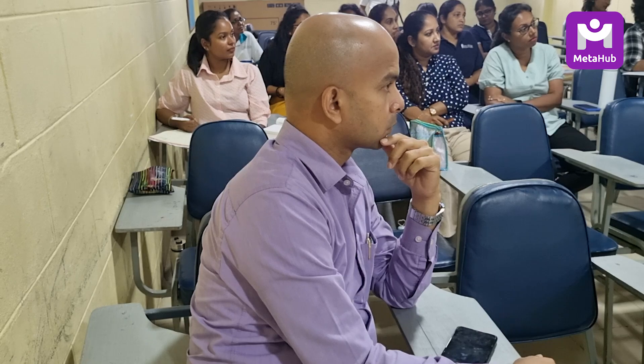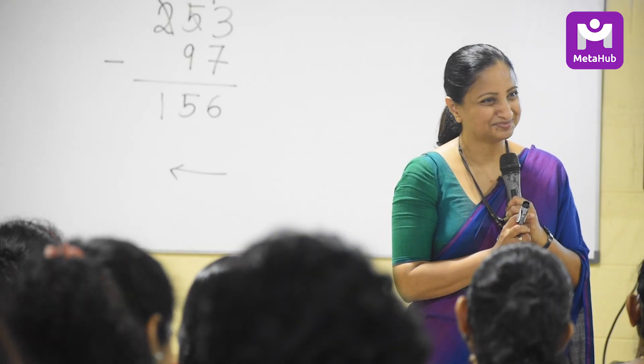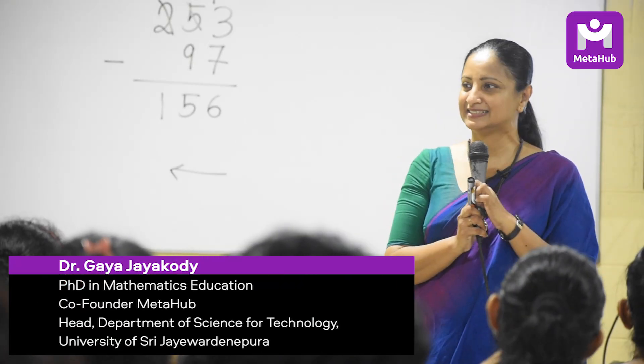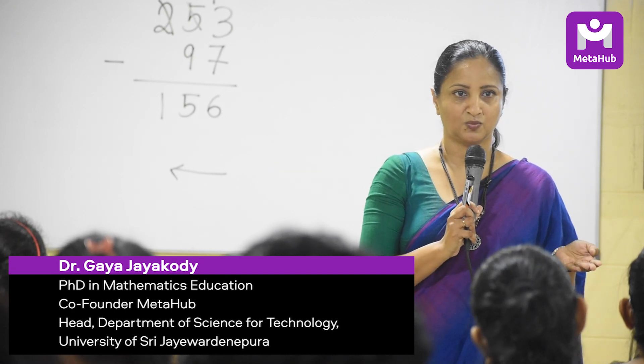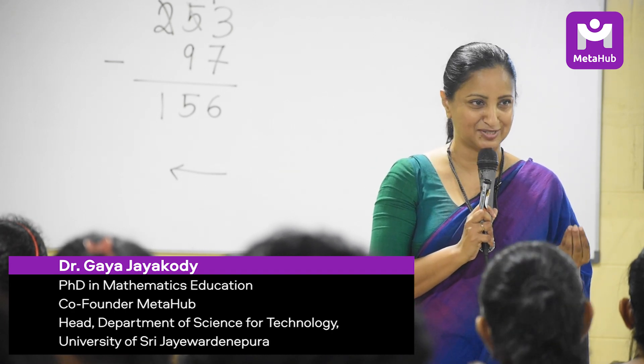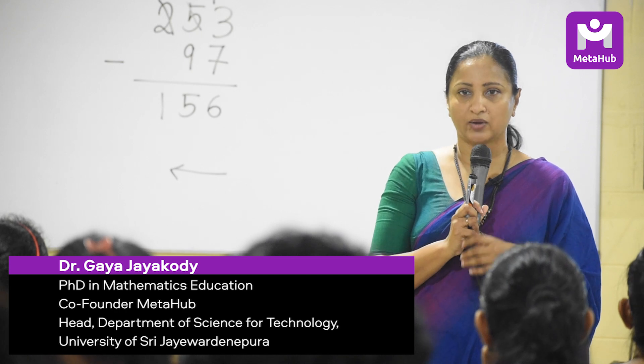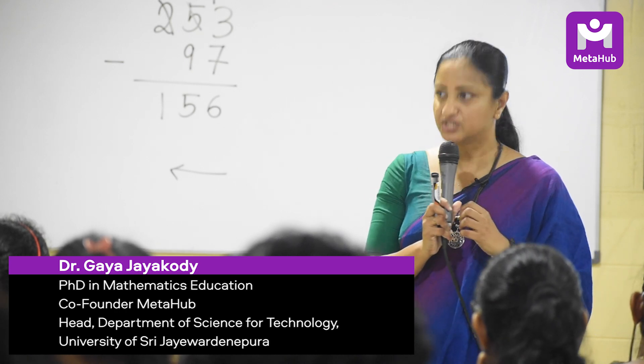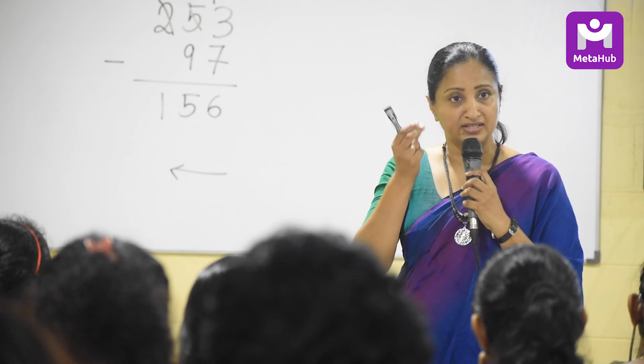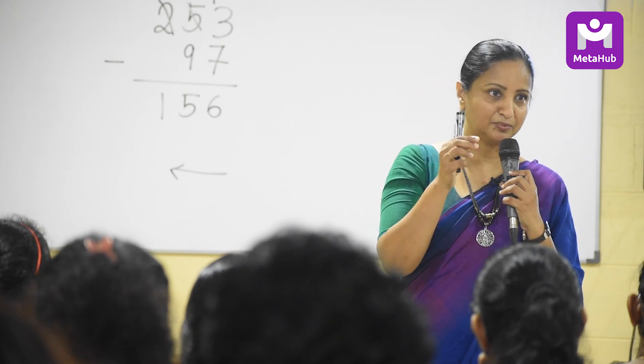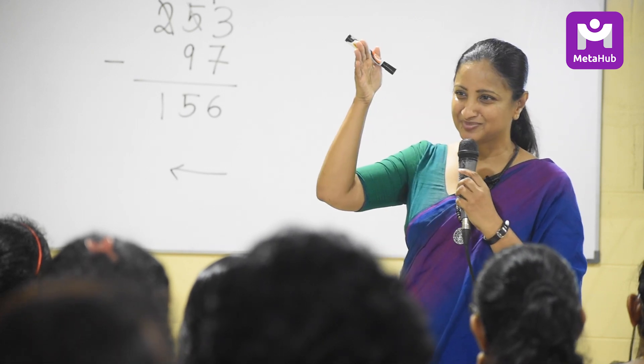If I teach subtraction very nicely, very slowly, very clearly to a kid and he says 'oh I understood how to subtract' — do you think he understood? Kids don't even know what understanding a concept looks like. What he understood is a procedure. He doesn't know the necessity of writing the numbers and aligning the place values.